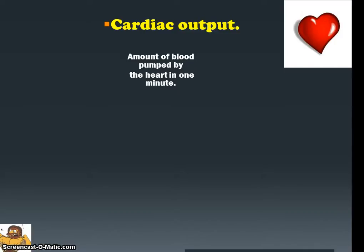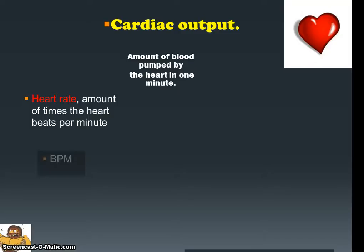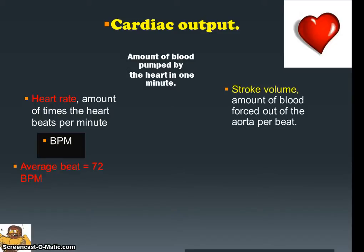So what is cardiac output actually made up of? The calculation is relatively straightforward. It's our heart rate, which is the amount of times the heart beats per minute — also known as BPM. And also the stroke volume, which is the amount of blood forced out of the aorta or the ventricles per beat.